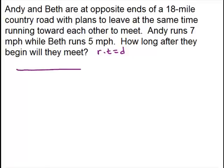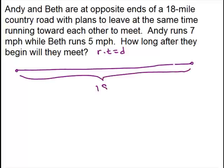We've got a country road that is 18 miles long. We have Andy at one end and Beth at the other end and they run toward each other. Now Andy is running 7 miles per hour. We're not going to put that in here, but we do know that means he's going faster so he's going to go past the halfway mark. So this is where they're going to meet.